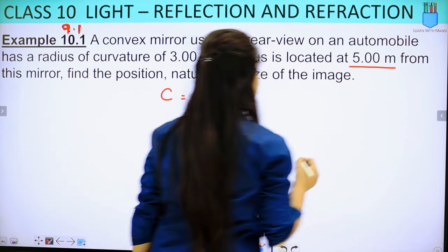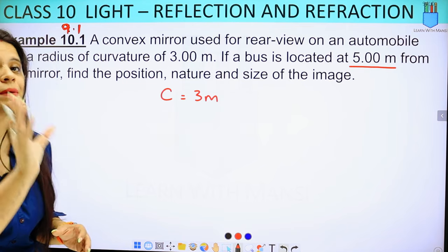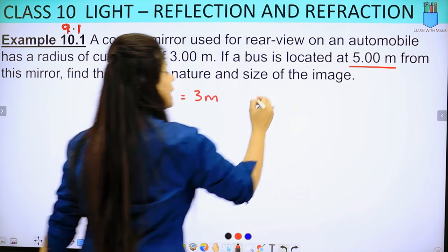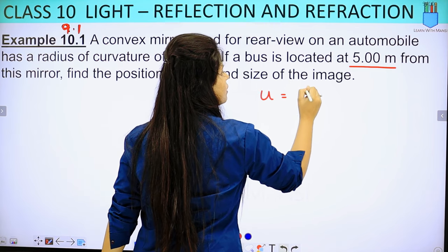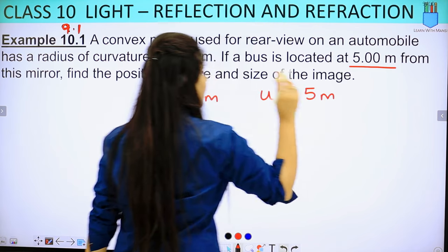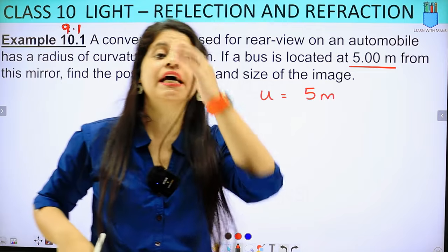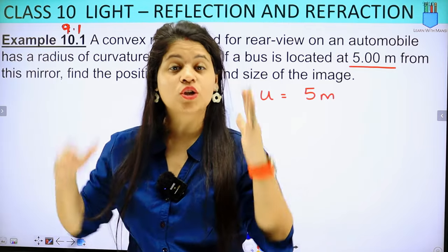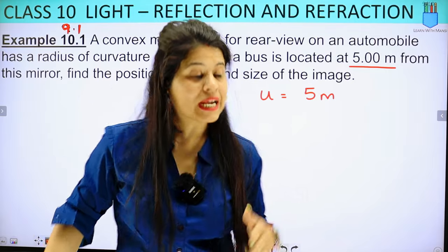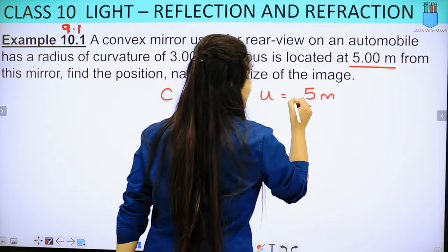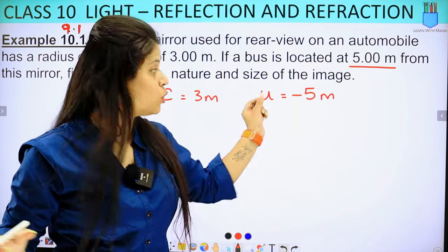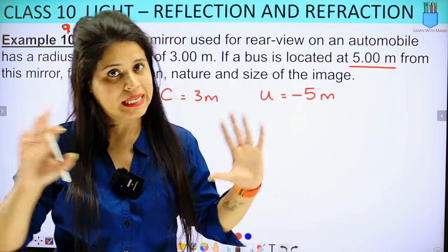What does it give us? 5 meters. Our bus, the object, is how far from the mirror? 5 meters. That means this is U given, U given is 5 meters. Now, if we go to sign conventions, we have seen that we will always keep the object on the left side of the mirror, which means it will be negative. Whether it is convex or concave, U is always negative.